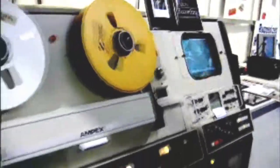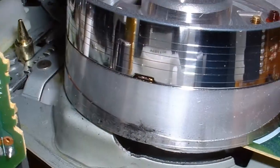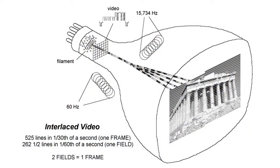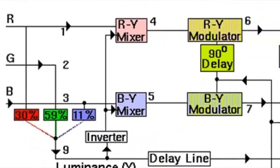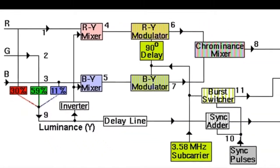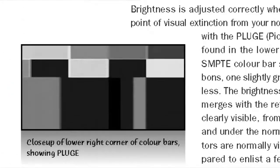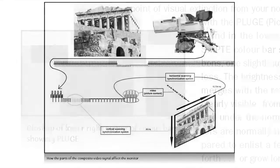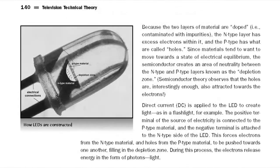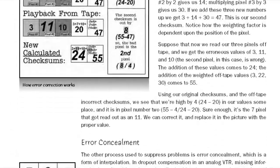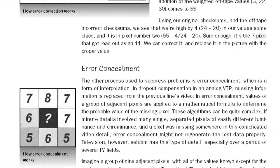As we all know, we're seeing the analog video system we've been using for over 60 years quickly become an historical footnote. But digital video is a descendant of analog, so it's important to understand our analog legacy as well. Television Technical Theory gives you both a look at where we've been, and an understanding and insight into where we're going in our rapidly changing digital video world.